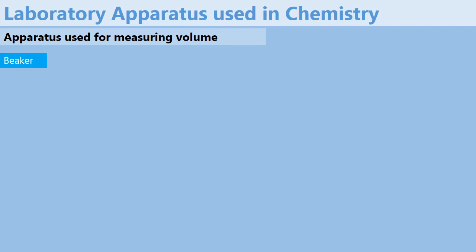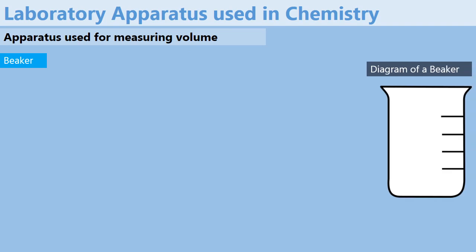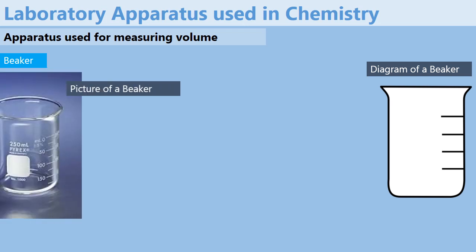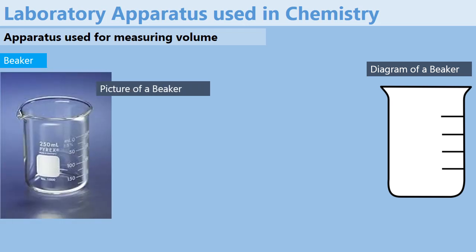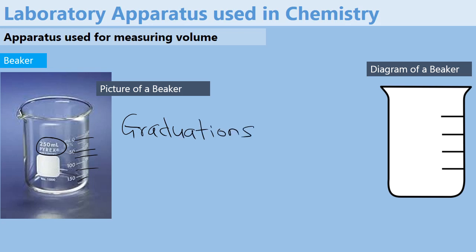The first one is known as a beaker. Here we have a nice diagram of a beaker, and on the left hand side we have a picture of a 250 milliliter beaker. You can see that it has markings which we usually call graduations, or sometimes calibrations.